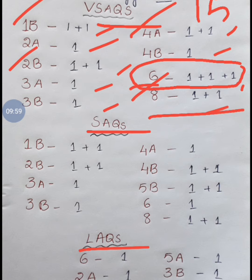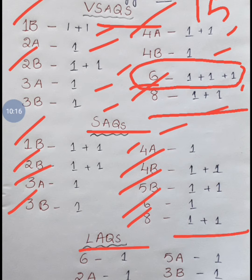Coming to short answer questions: 1B: 2, 2B: 2, 3A: 1, 3B: 1, 4A: 1, 4B: 2, 5B: 2, sixth chapter genetics: 1, and last applied biology: 2. This is about the short answer questions list.